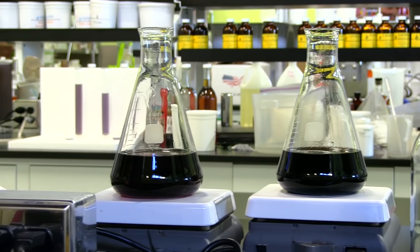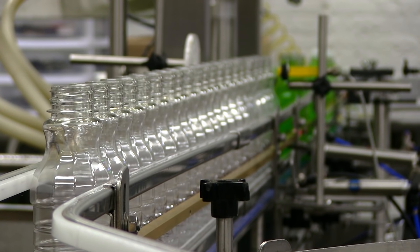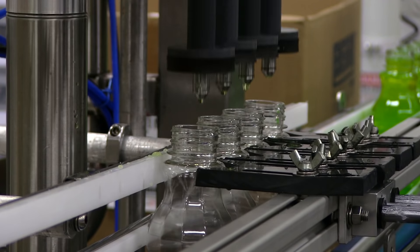These parameters are set when the beverage is created in the lab. During production, quality control tests the beverage as it comes off the line to make sure everything is in check.